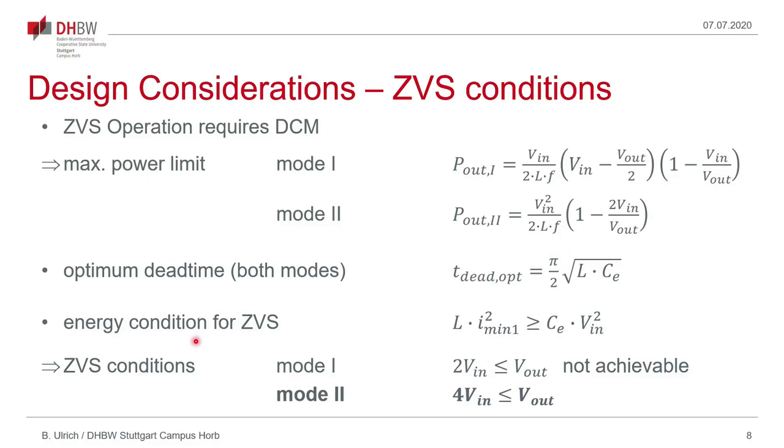And the last is an energy condition which says that the energy stored in the inductor must be greater than the energy stored in the capacitors to fully discharge them. From this one can derive two conditions depending on the input and output voltage for both modes. In mode one the output voltage needs to be at least two times the input voltage to achieve full ZVS which is not achievable as in this case the output voltage is lower than two times V_in. And in mode two the output voltage should be at least four times the input voltage which can be achieved and can be seen as the better of the two operating modes.